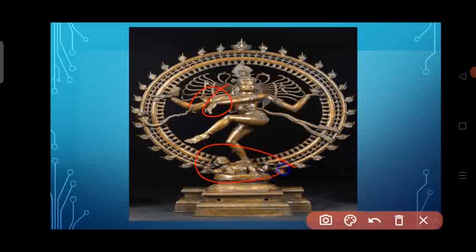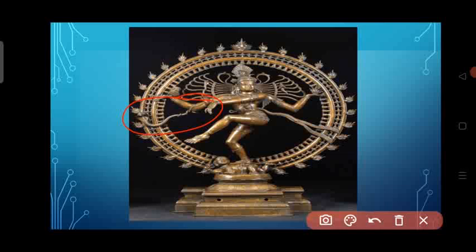In the Nataraja sculpture, Shiva dances on a small dwarf figure, which symbolizes ignorance and the ego of an individual. The matted and flowing locks (hair) of Shiva represent the flow of the river Ganga. In ornamentation, Shiva has the male earring on one ear and the female earring on the other, representing the fusion of male and female, referred to as Ardhanarishvara. A snake twisted on Shiva's arm symbolizes the Kundalini power which resides in the human spine in a dormant state — if aroused, one can attain true consciousness. Behind the Nataraja, there is a nimbus of glowing light symbolizing the vast, unending cycle of life.